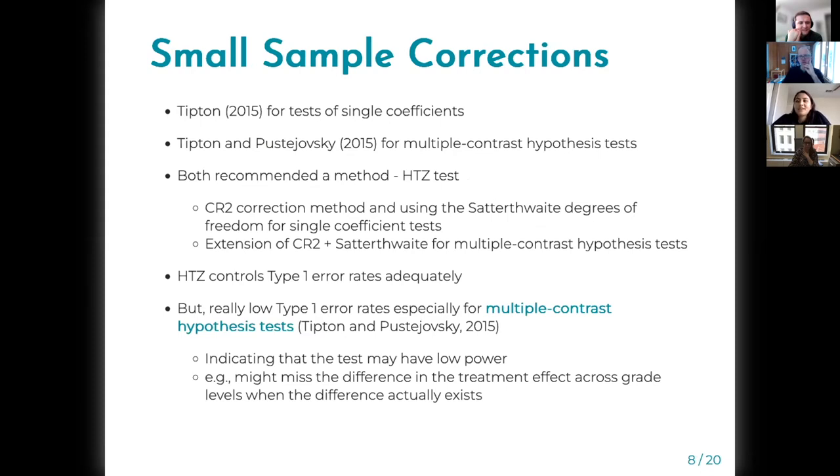So the problem with the CR0 type CRVE suggested by Hedges, Tipton and Johnson was that it results in high type I error inflation when the number of studies in the meta-analysis is small.